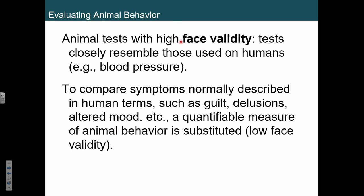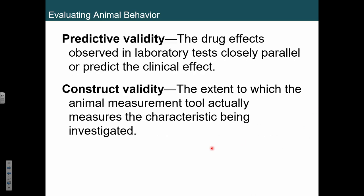So, animal tests — you guys know about face validity. It's got to closely resemble what happens in humans. The problem is, when you get to things like guilt, delusions, or altered mood, how are you going to quantify that with animal behavior? That's lower face validity — that's harder to figure out. We also want to talk about predictive validity: anything we do in the lab, we really want to try to predict whatever the clinical effect is. If we give a dog Prozac, we want that to predict what happens when we give a human Prozac.